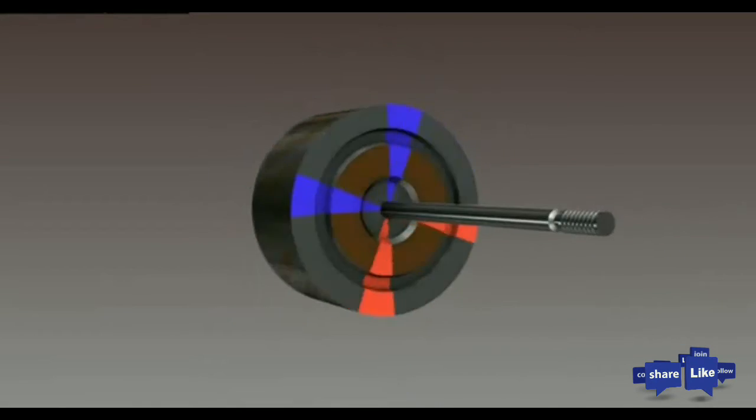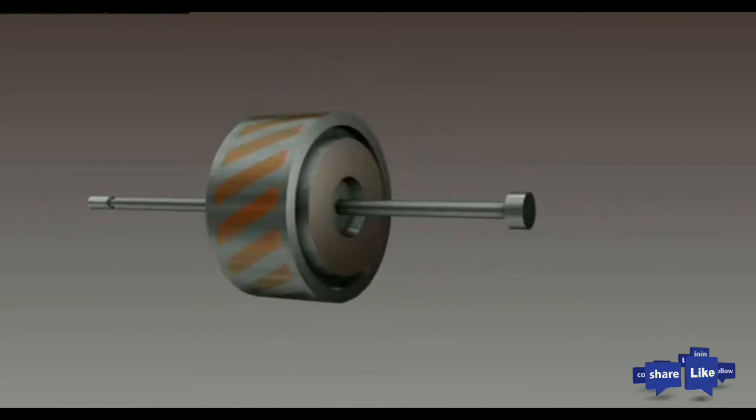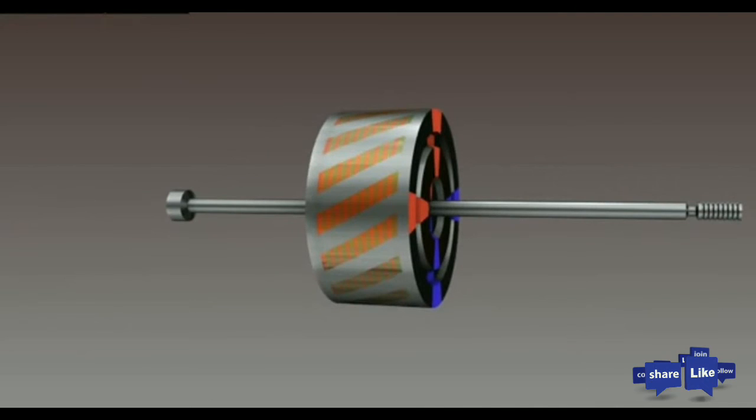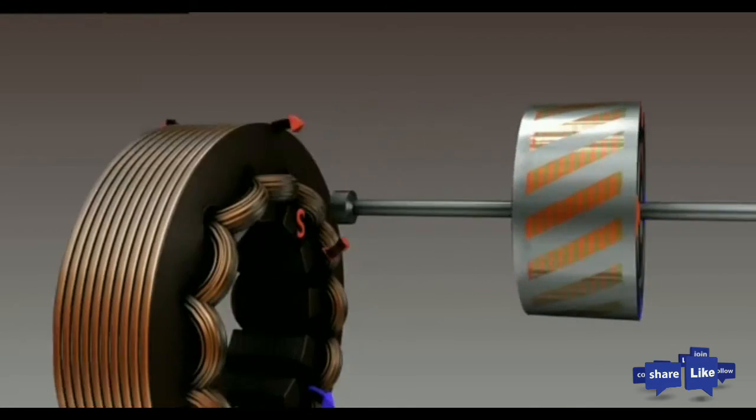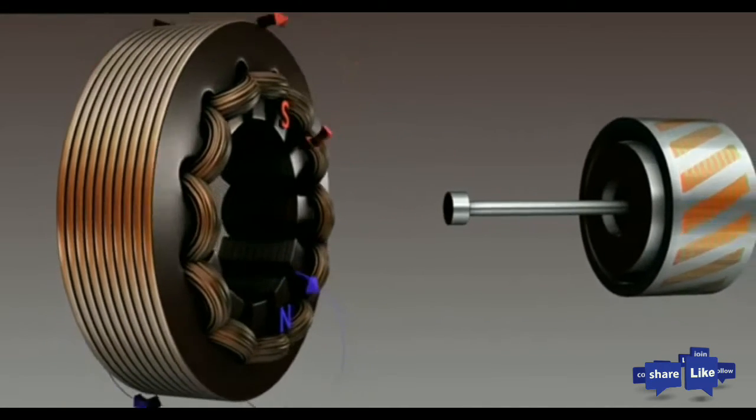The rotor is the rotating electrical component. It also consists of a group of electromagnets, arranged around a cylinder, with the poles facing toward the stator poles. The rotor is located inside the stator.